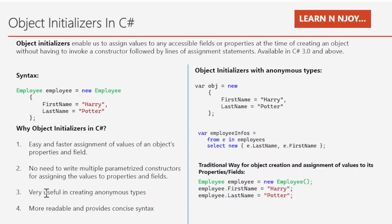Number three: object initializers are very useful in creating anonymous types — they play a key role in that. Number four: they provide more readable and concise syntax, making our code more readable.